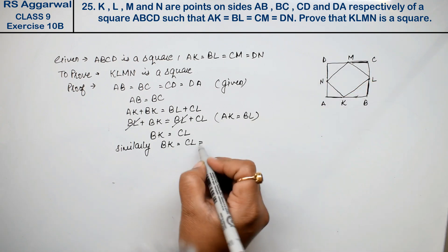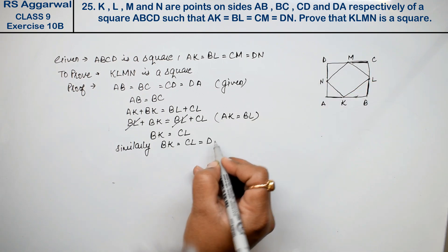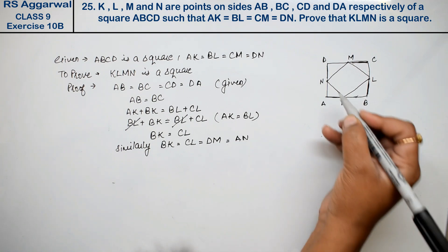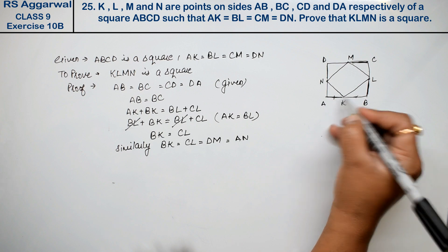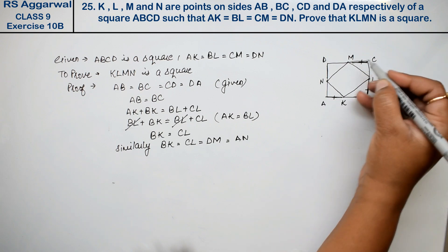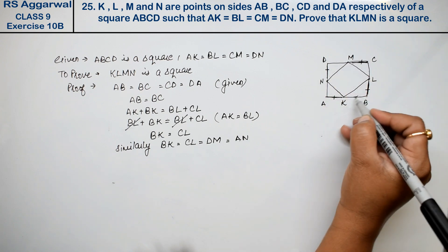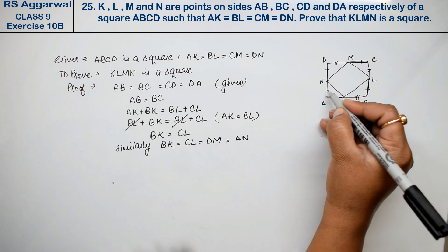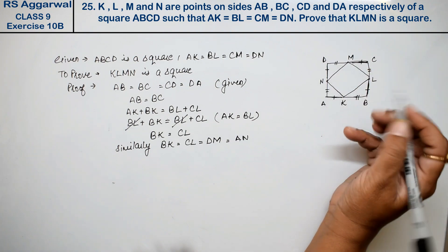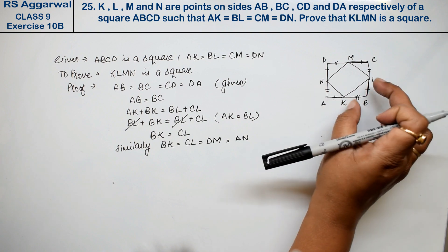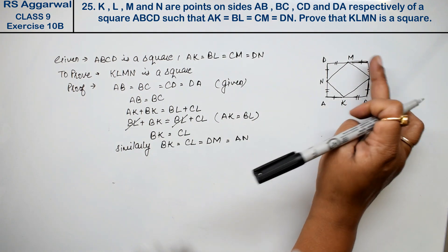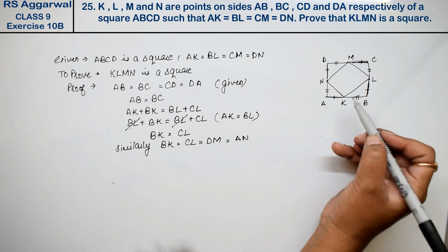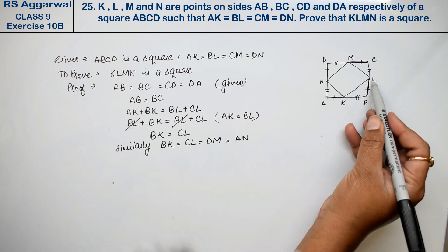Similarly, BK equals CL equals DN. So this side and this side are proved similar, right friends? Because AK equals BL equals CM equals DN, so BK equals CL equals DM equals AN are all proved equal.